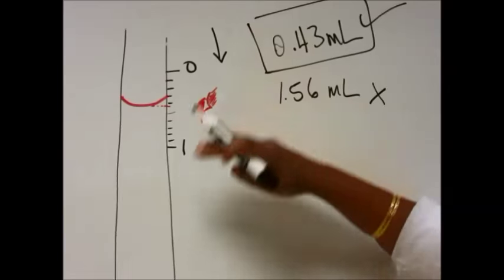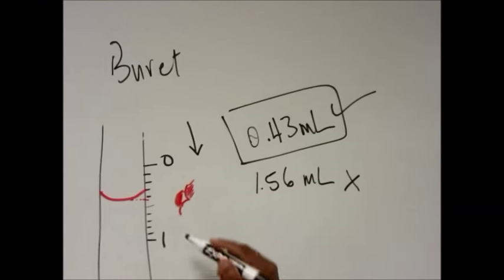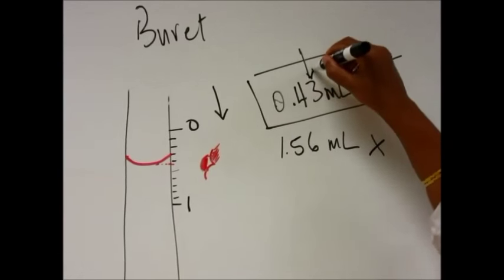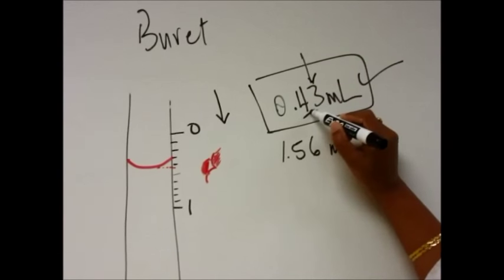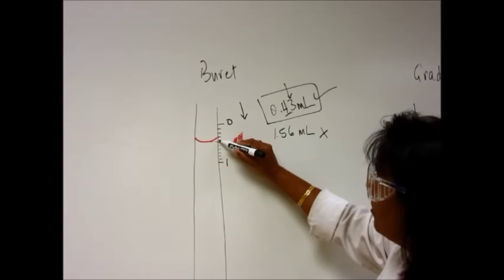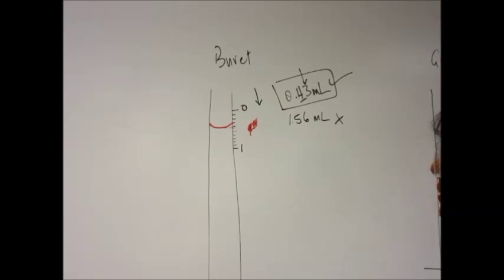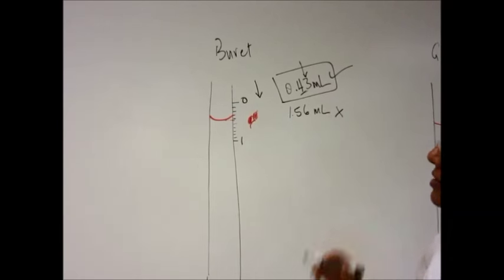Remember, you're estimating this number. The 0.4, this is for sure that you have this reading, but the other one you're not quite sure of, so you still estimate that. This one is 0.03 and that's fine. So read the burette top down.